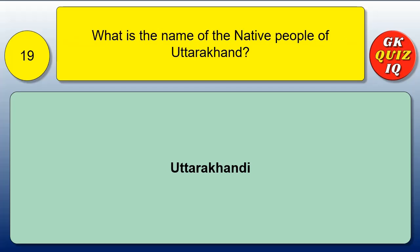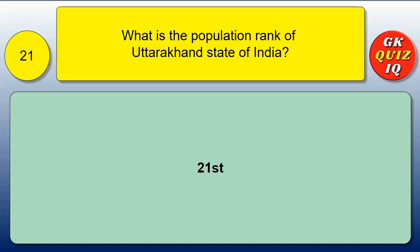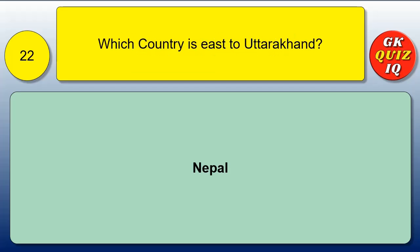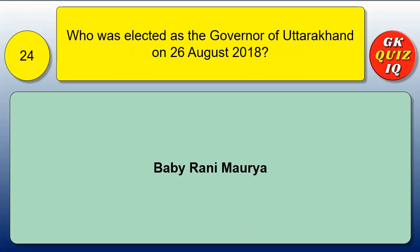What is the name of the native people of Uttarakhand? Uttarakhandis. What is the percentage of Uttarakhand population living in rural areas? 69.77%. What is the population rank of Uttarakhand among states of India? 21st. Which country is to the east of Uttarakhand? Nepal. How many chief ministers have served Uttarakhand since its formation? 10. Who was elected as the governor of Uttarakhand on 26 August 2018? Baby Rani Maurya.